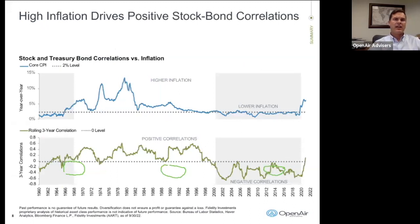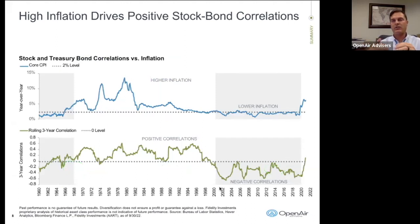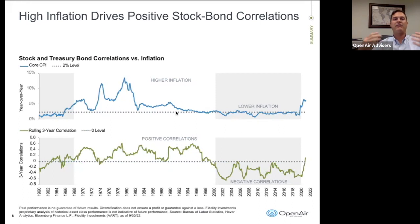Stock market and treasury bond correlations versus inflation: with higher inflation, the market is more correlated, meaning stocks and bonds move together. This year is one of those time periods in a high inflationary environment with rising interest rates. Looking at the right-hand side of the chart, we have positive correlation during a time period of higher inflation.